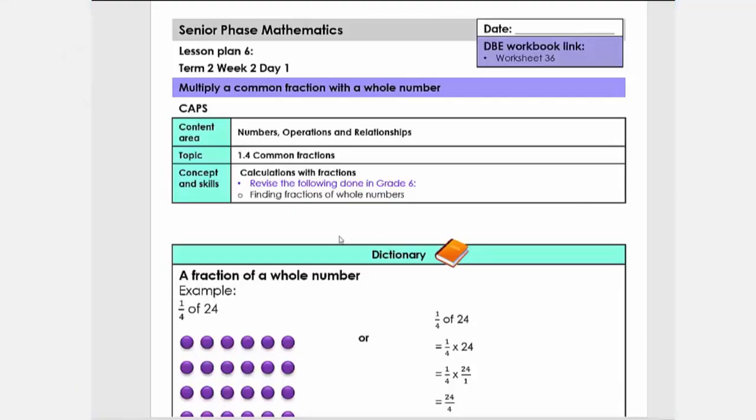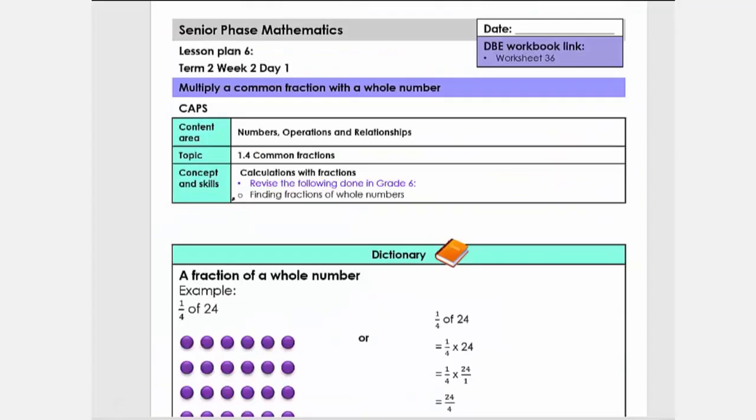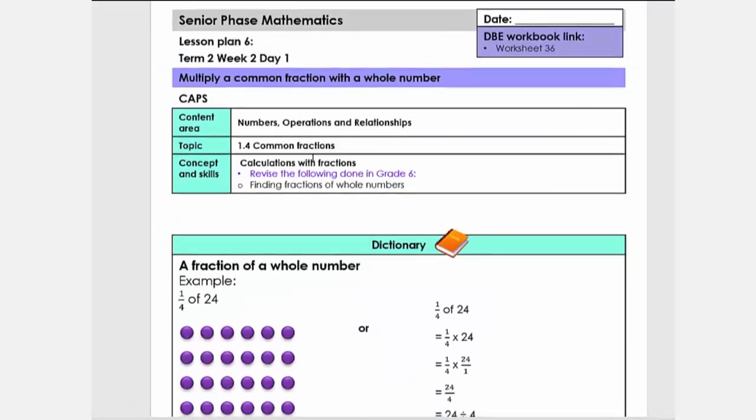Good day, everybody. Today we're going to do lesson plan six, term two, grade seven, and we're going to look at multiply a common fraction with a whole number. This also links to worksheet 36 in the DBE book, and we can also see how it links to the CAPS.